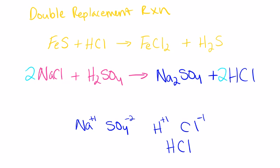Lastly, we need to balance our equation. A 2 goes here and a 2 goes here. That is a simple double replacement equation. It's not always so simple to get these oxidation numbers — sometimes you have to un-crisscross what you're given, and we're going to do that on the next problem.